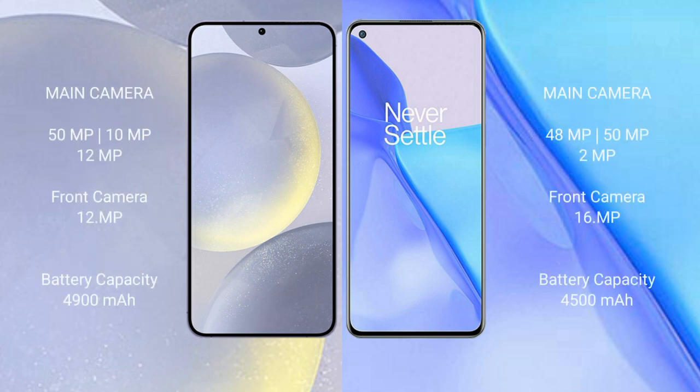Samsung Galaxy S24 Plus features a rear triple camera setup of 50MP plus 10MP plus 12MP, and a front camera of 12MP. OnePlus 9 features a rear triple camera setup of 48MP plus 50MP plus 2MP, with a front camera of 16MP.